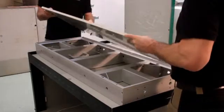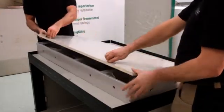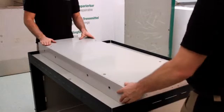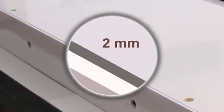Subsequently, the Alcus solid plastic panel is positioned. The Alcus panel must be aligned in the formwork. The gap between the formwork and the Alcus panel should be approximately 2 mm.